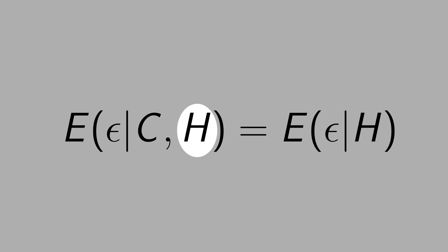What is h? h is a high mark in a test. You want to control for ability and avoid the omitted variable bias problem.